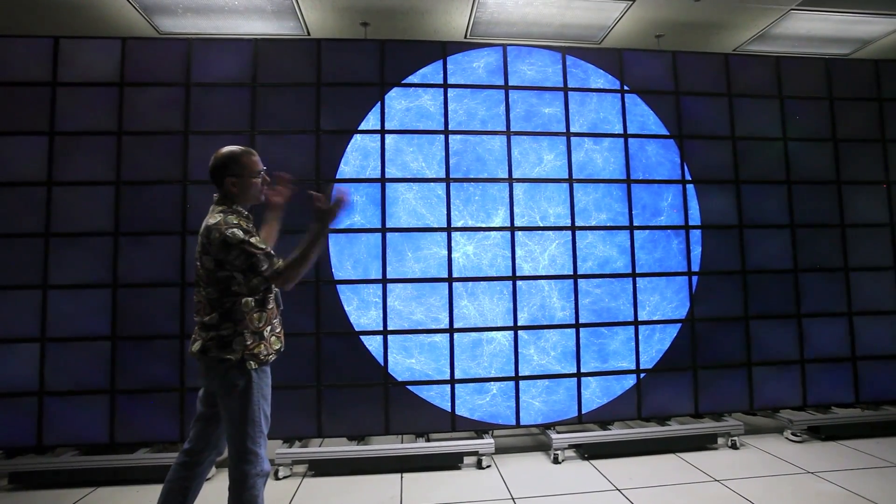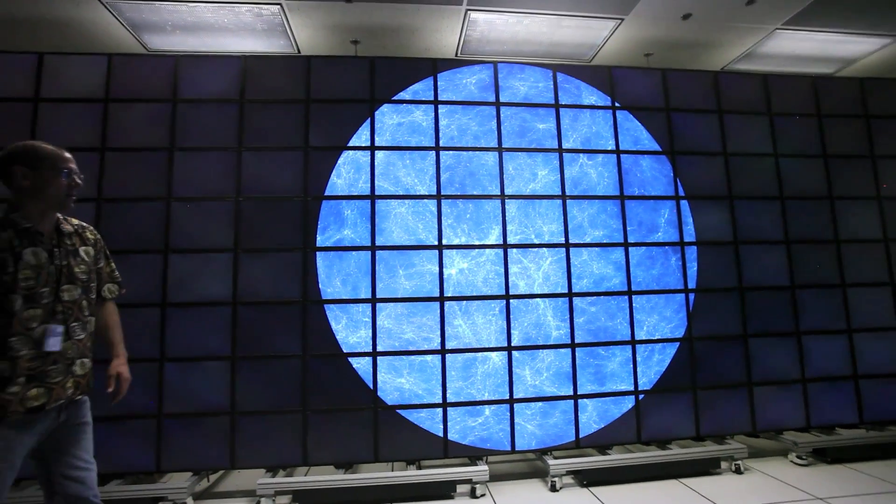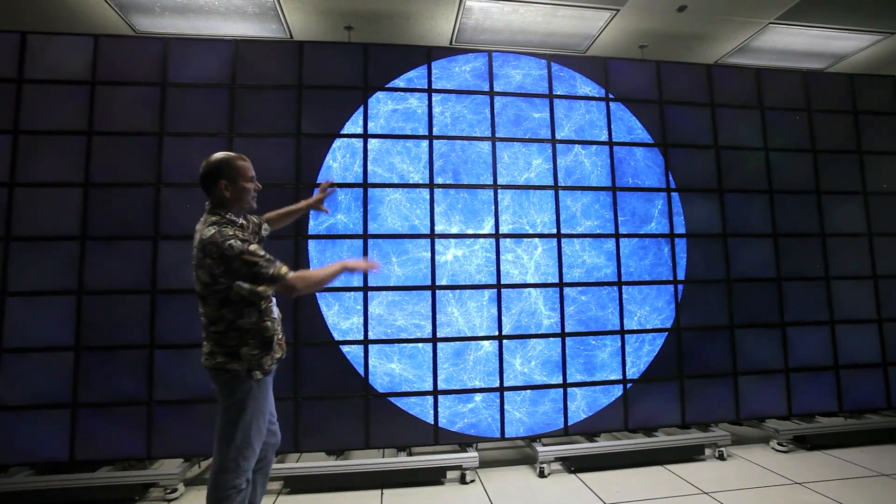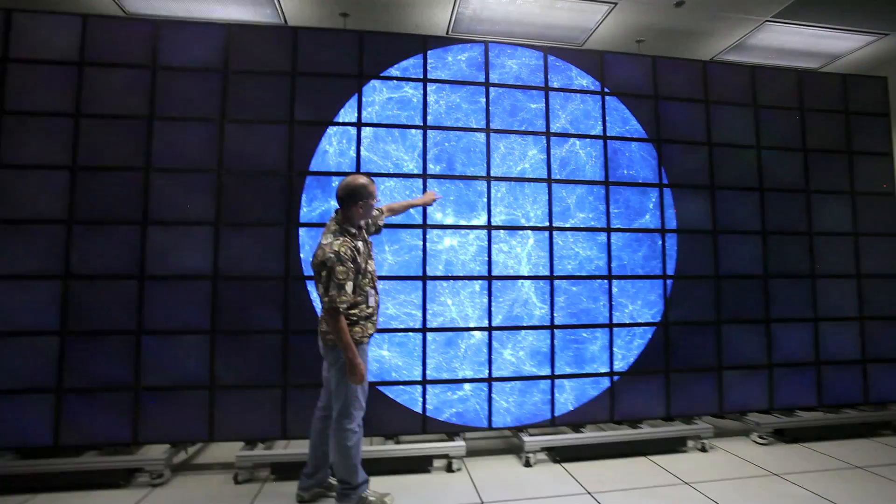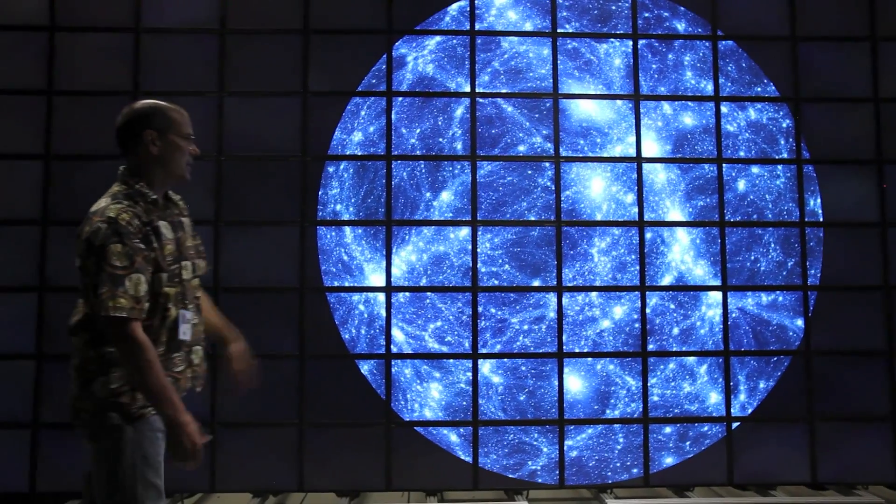Now we're evolving this to the present. The simulation spans about thirteen and a half billion years. You can see the development of this kind of web-like structure. The effects that you see here are galaxies. That's the big picture.